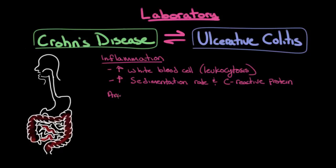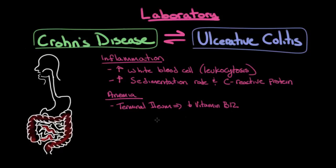Another laboratory finding in Crohn's disease and ulcerative colitis is anemia — a low hemoglobin count. Hemoglobin is an important component of red blood cells. In Crohn's disease, if the terminal ileum is involved, the body is not able to properly absorb vitamin B12, which is necessary to produce red blood cells, resulting in anemia. Also, both Crohn's disease and ulcerative colitis can have bloody diarrhea, and if this bloody diarrhea occurs frequently and over long periods of time, that cumulative blood loss can also result in anemia.